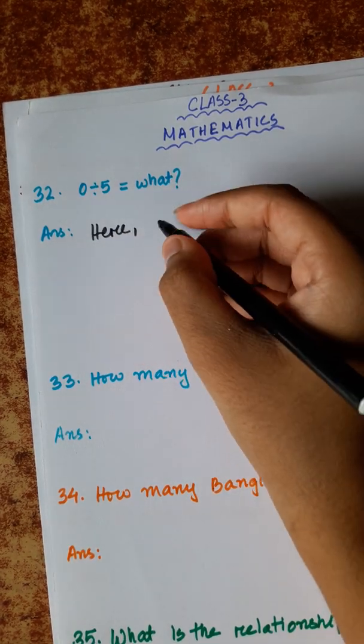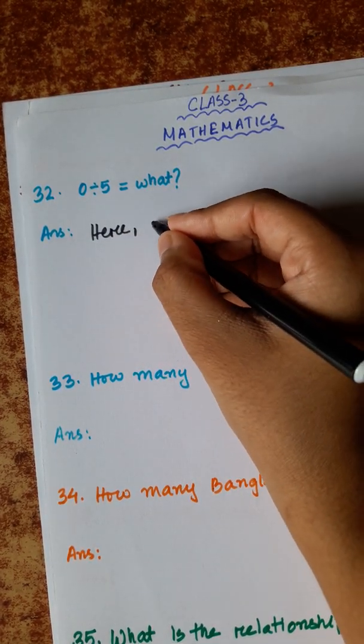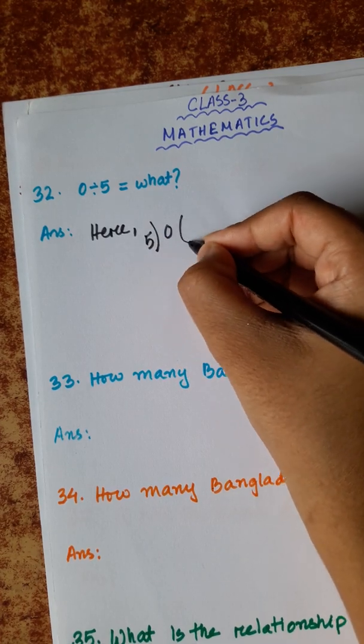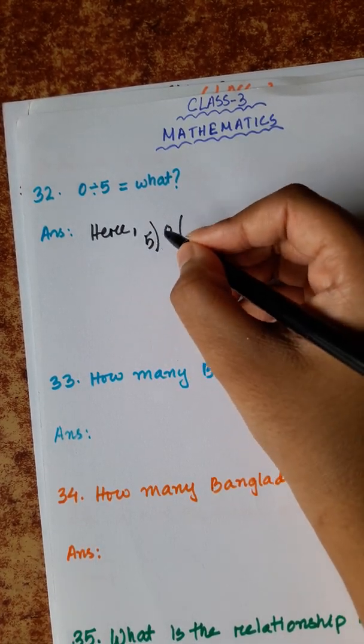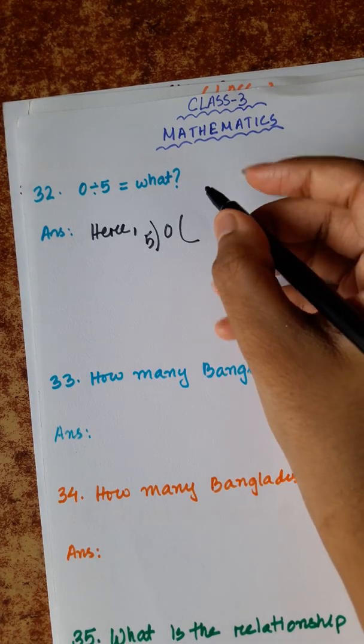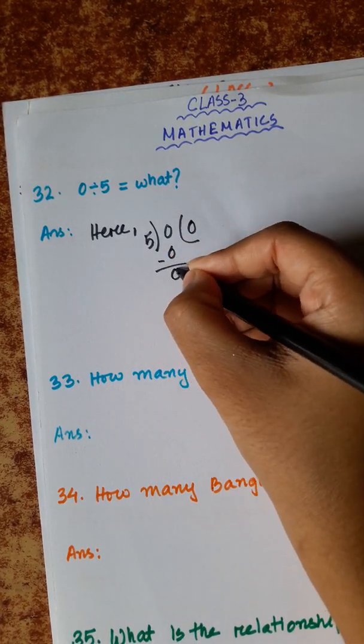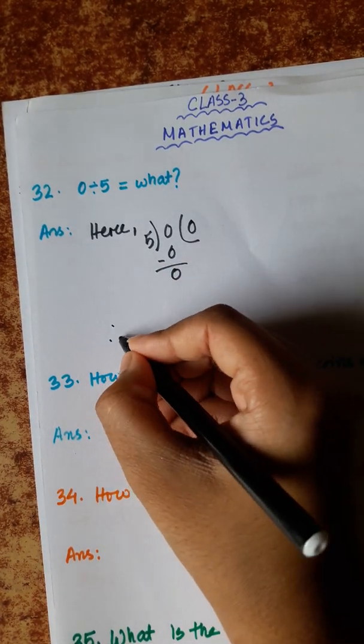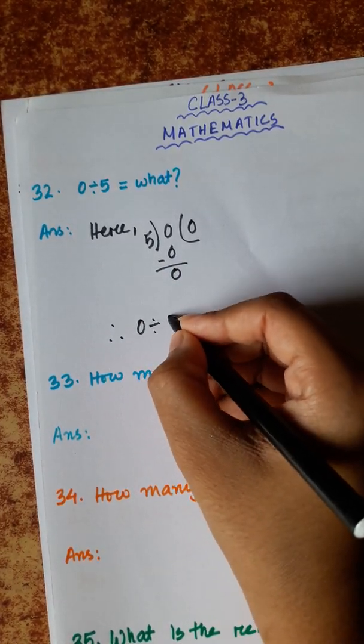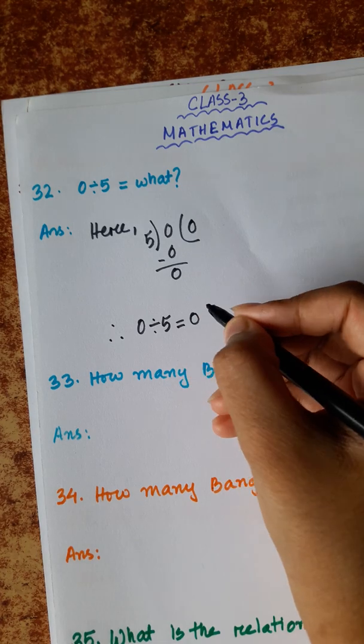Here. 5 divided by 5 is equal to 0. 5 zeros are 0. So, 0 divided by 5 is equal to 0.